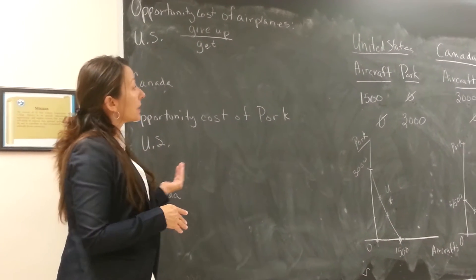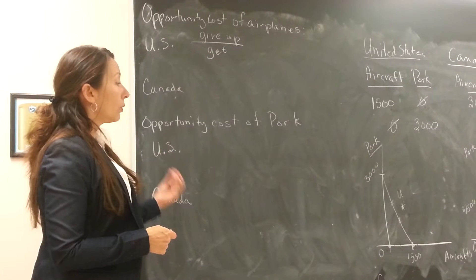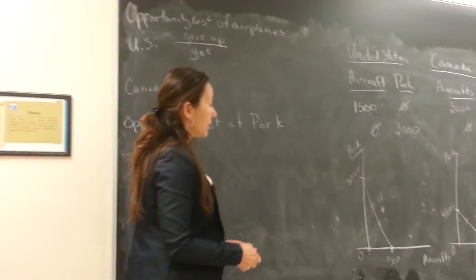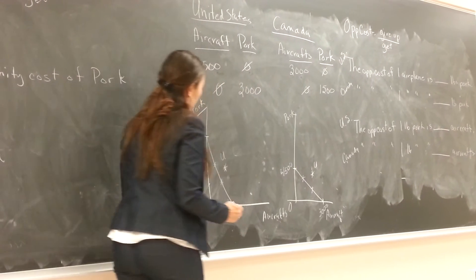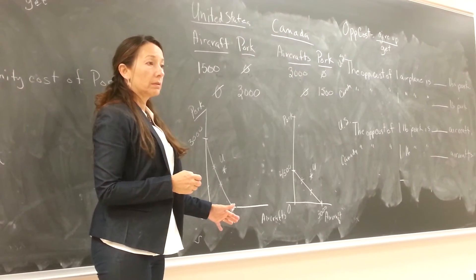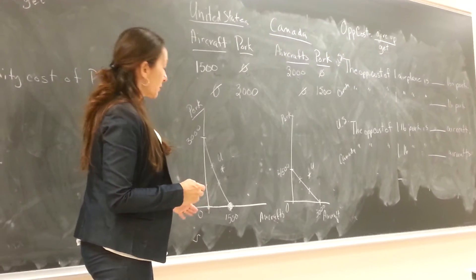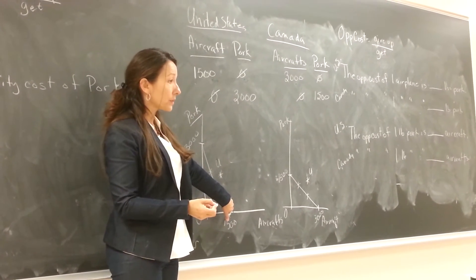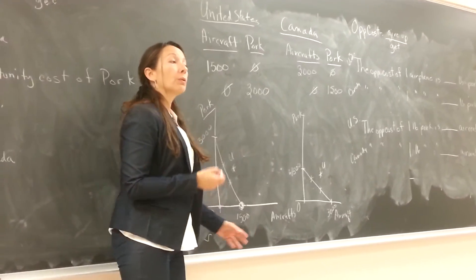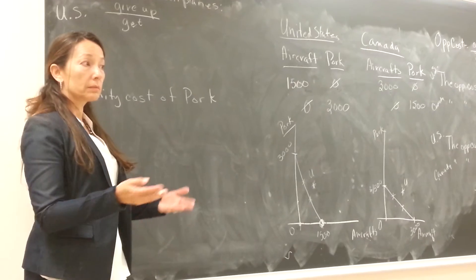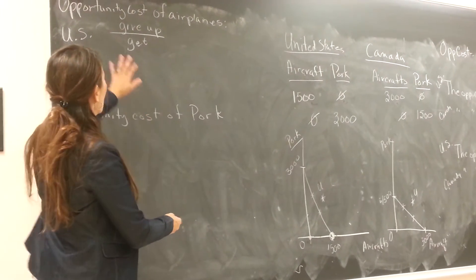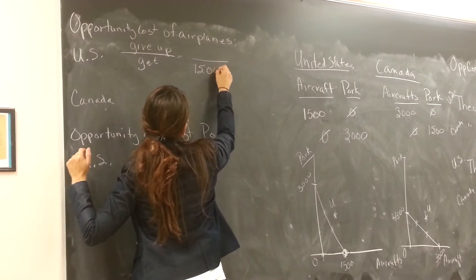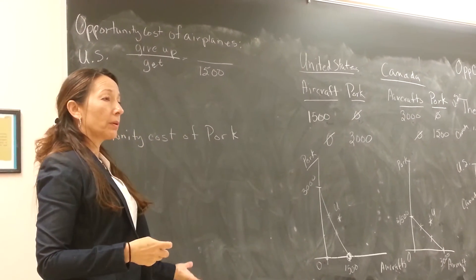As a country, we're asking: if the United States is only going to produce aircraft, what does it have to give up? If all land, labor, capital, and entrepreneurial ability is dedicated to aircraft — remembering that full utilization of resources is a key assumption — then you have no resources to produce anything else. So in the U.S., if we want to get 1,500 aircrafts, how many pounds of pork do we have to give up? 3,000.